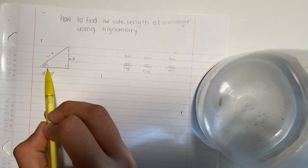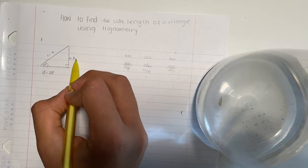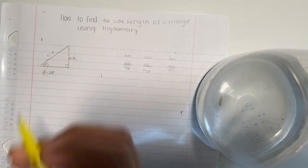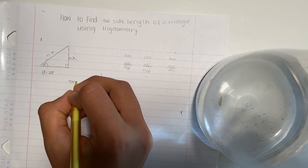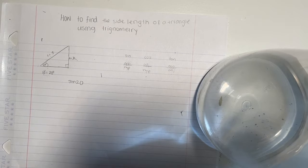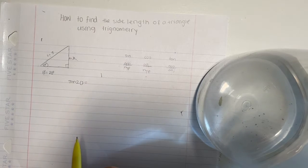In this triangle we can use sine because we're trying to find the opposite and the hypotenuse is already listed. So we would do sine of the angle, which is 20, and it's going to equal...